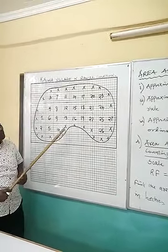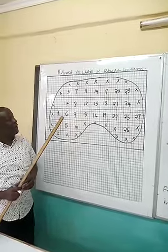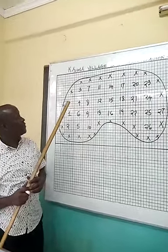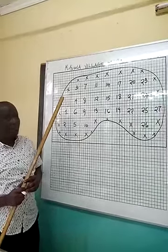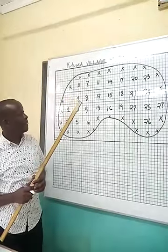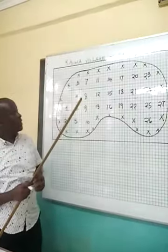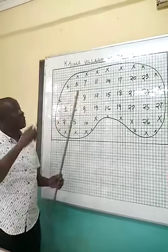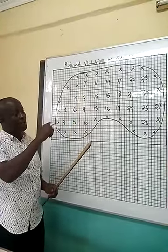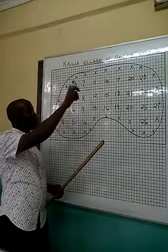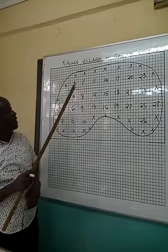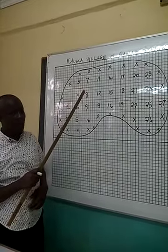So in this type of area approximation, I want us to count the full squares. The full squares. And my full squares I will take you through because it is an irregular shaped village in Ramba location. And I want us to count the full squares first.